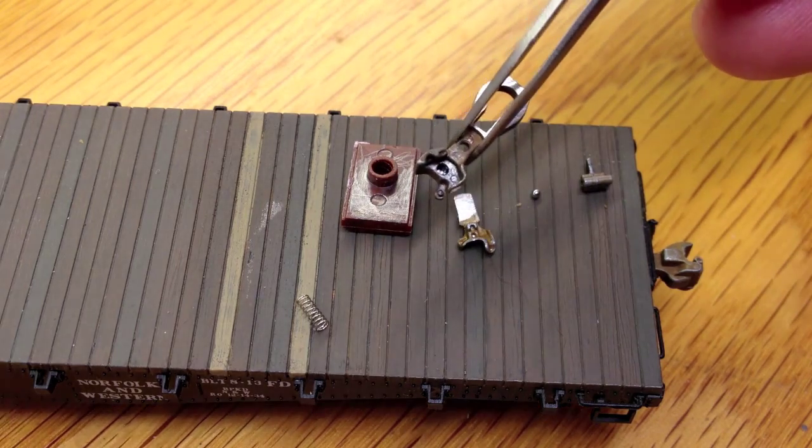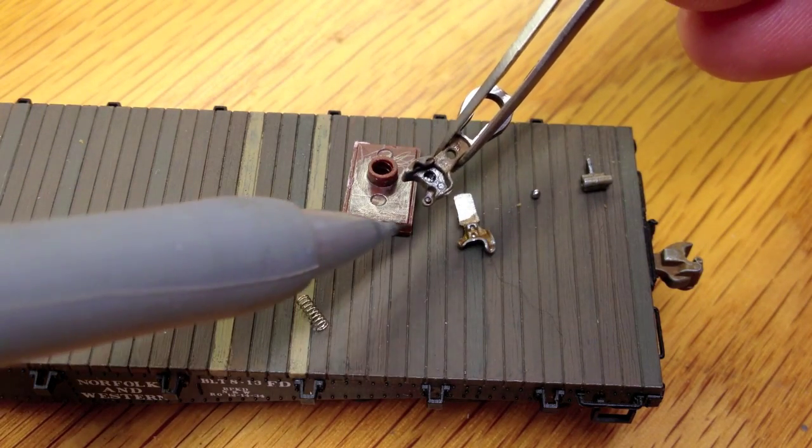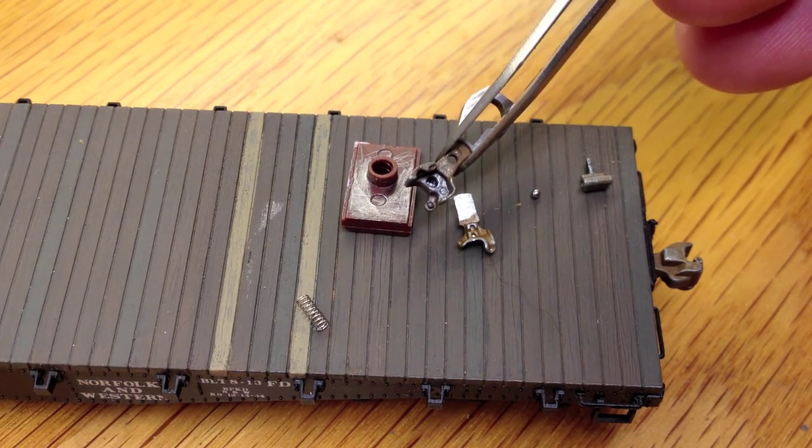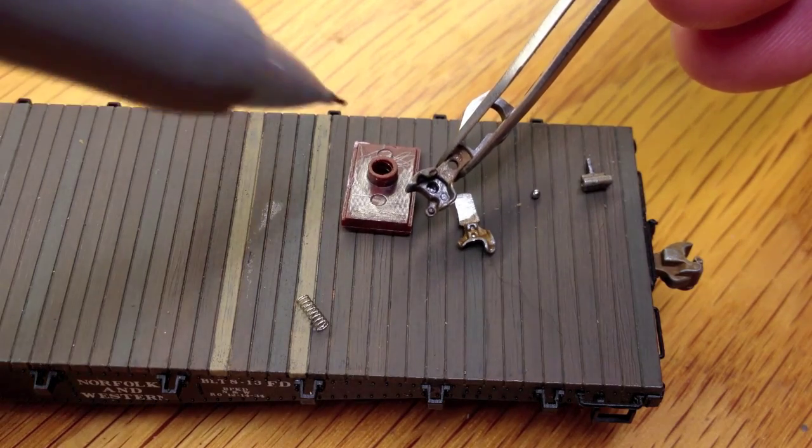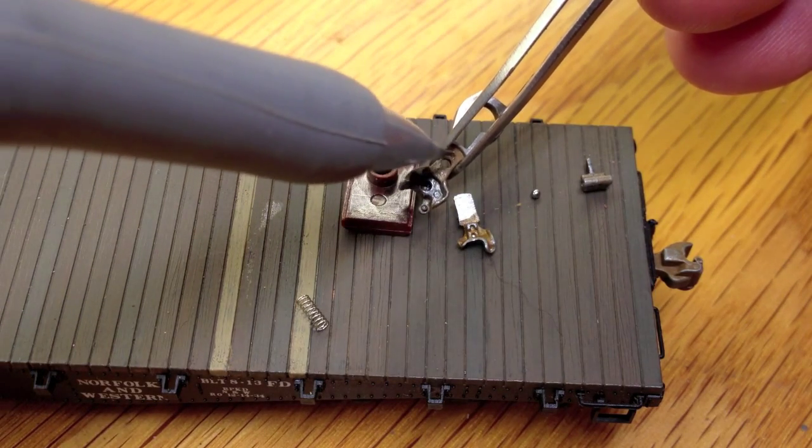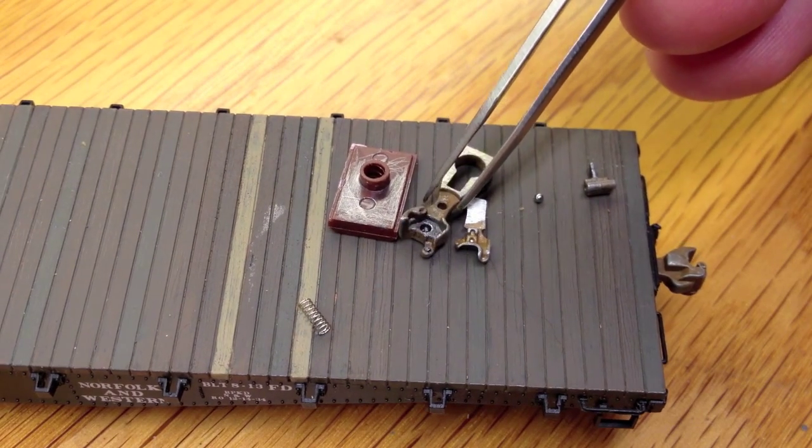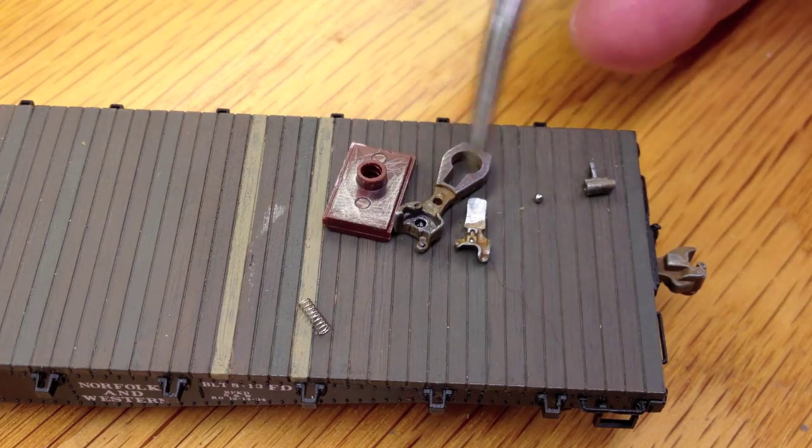Also, on this view, you can see this little ear here. That's the actual pivot that the knuckle swings on. And there is a hole back here, that is the place that the pin on the bottom half cover press fits into.